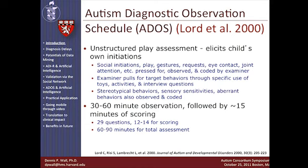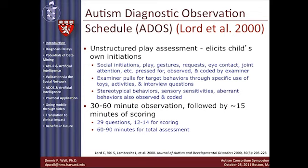The second behavioral diagnostic exam is the Autism Diagnostic Observation Schedule, also designed by Catherine Lord and colleagues in 2000. This is a very commonly utilized observation-based examination for the screening, categorization, and diagnosis of autism. It takes between 30 and 60 minutes to conduct the exam, followed by scoring time. The questions in the exam total 29, and scoring can bring the total time up to 60 to 90 minutes in length.